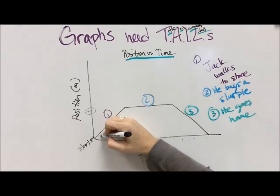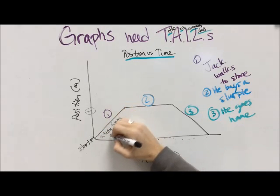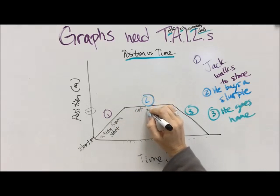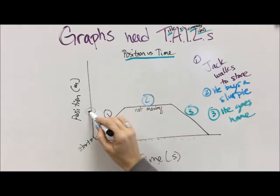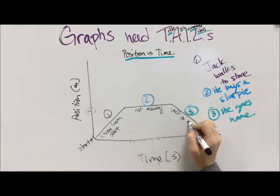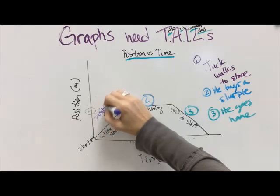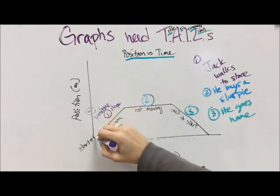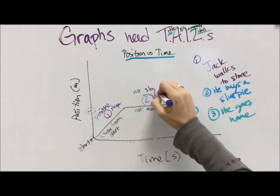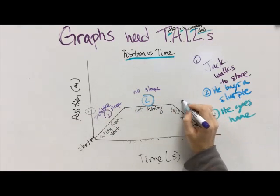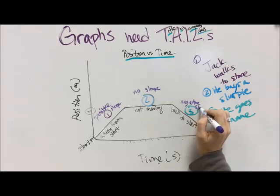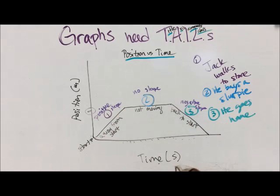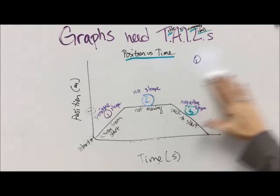So on any position-time graph, a line that moves up is going to be away from the start. A flat line tells us we're not moving because our position isn't changing. And then a downward sloping line is going to be back to the start. In math we call this positive slope because both values are increasing. Position and time are increasing. No slope because position is staying the same even though time marches on. And negative slope because our position is decreasing in value.